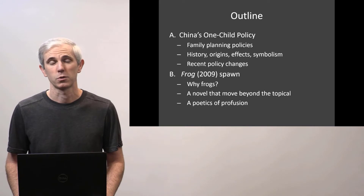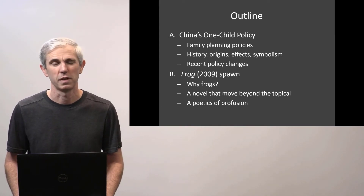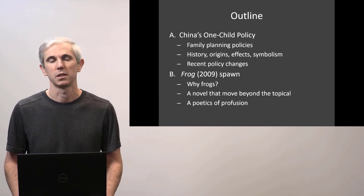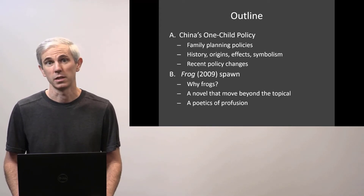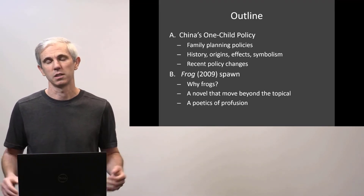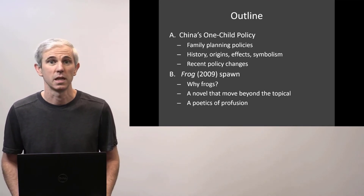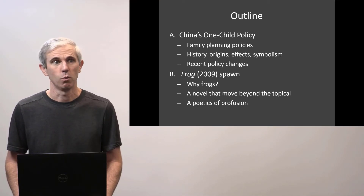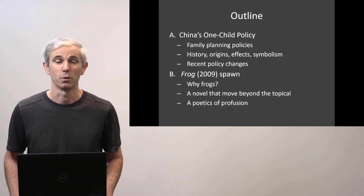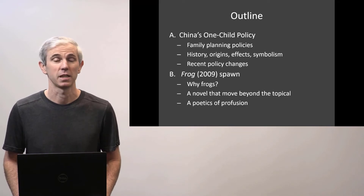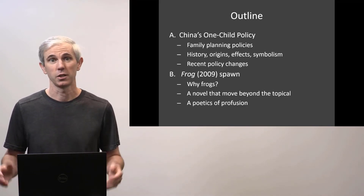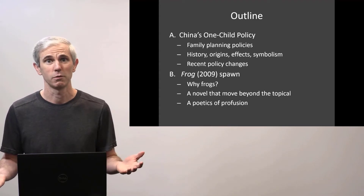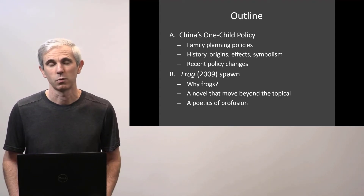Frog could be considered a work of historical fiction in that it is inspired by true events, specifically a nationwide policy to control China's population, commonly known as the one-child policy. The one-child policy is something of a stand-in for what is actually a series of policies that the Chinese Communist government has implemented and imposed on the populace over the course of modern history. History has actually overtaken fiction in this case, and China no longer has a one-child policy. So why should we read Frog?